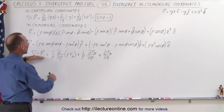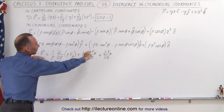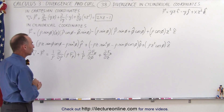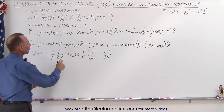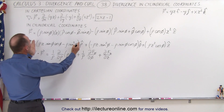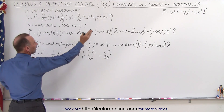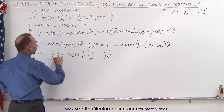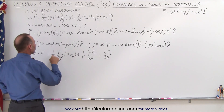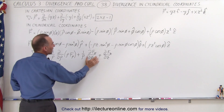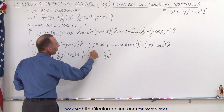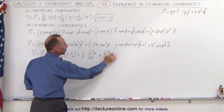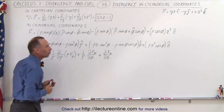Now we're going to take the divergence of that, using the formula from a few videos ago for how to take the divergence in cylindrical coordinates. The first thing we need to do is multiply the rho component of the vector field times rho, then take the partial derivative with respect to rho, then multiply times 1 over rho. We also take the phi component, take the partial derivative with respect to phi, and multiply times 1 over rho. Then we take the z component and take the partial derivative with respect to z.